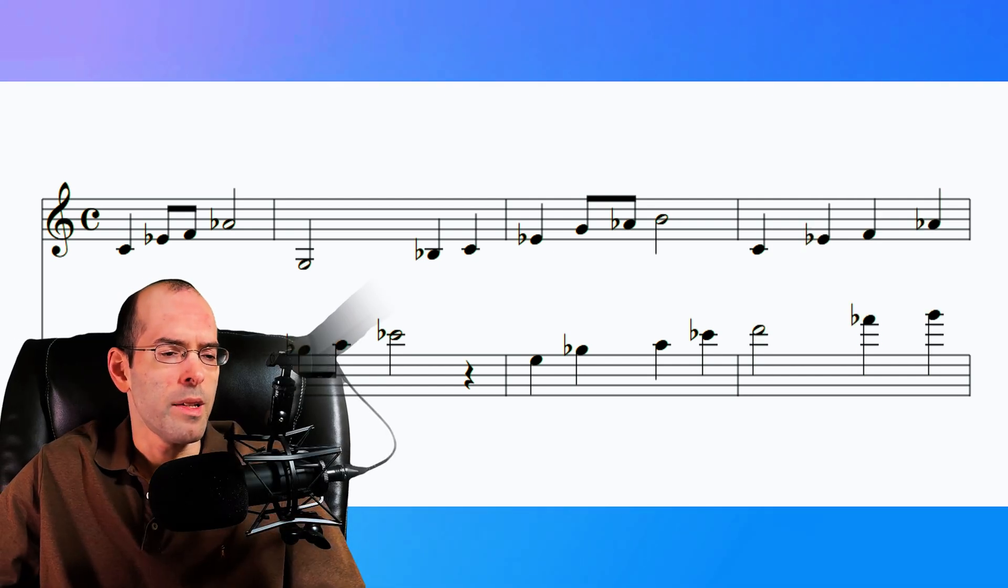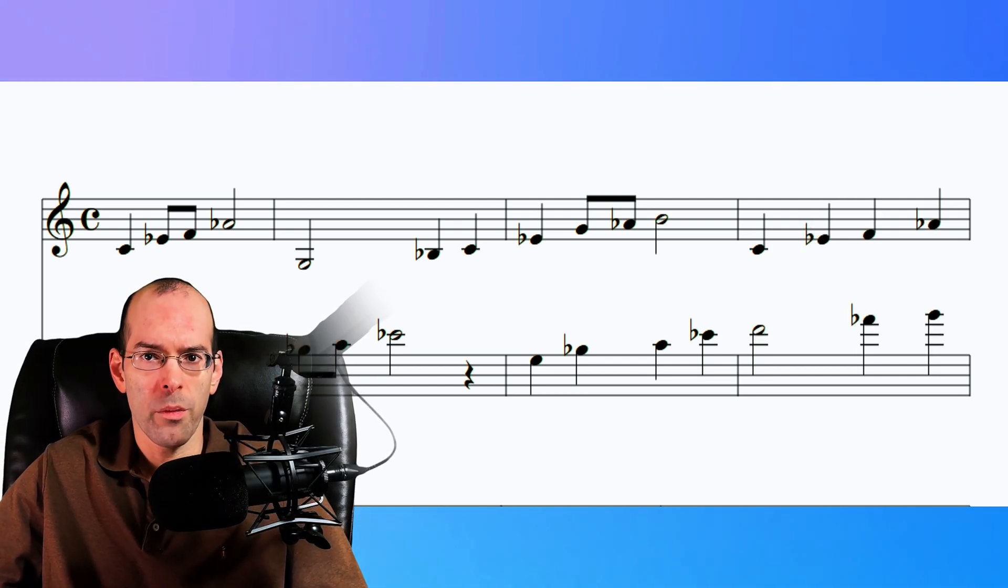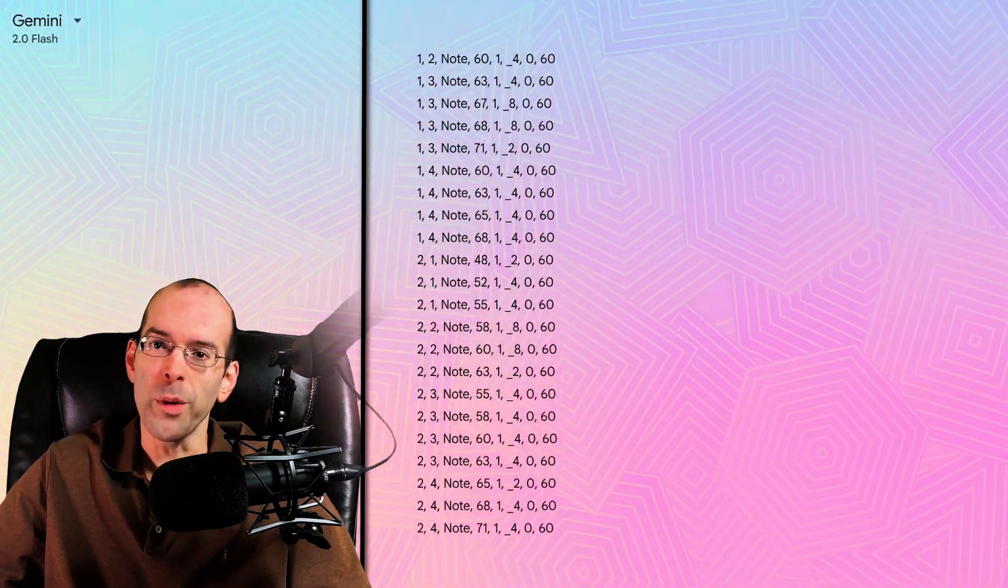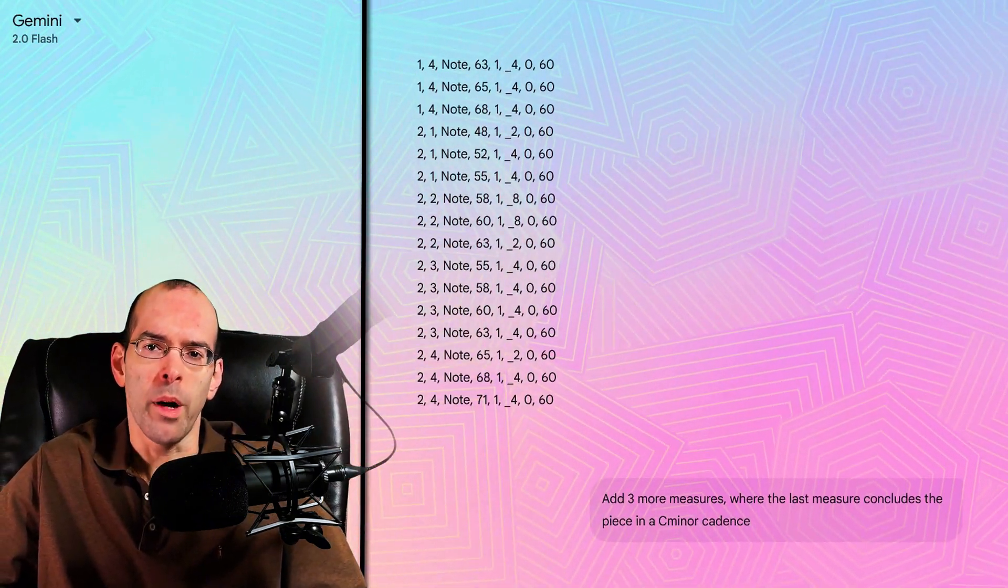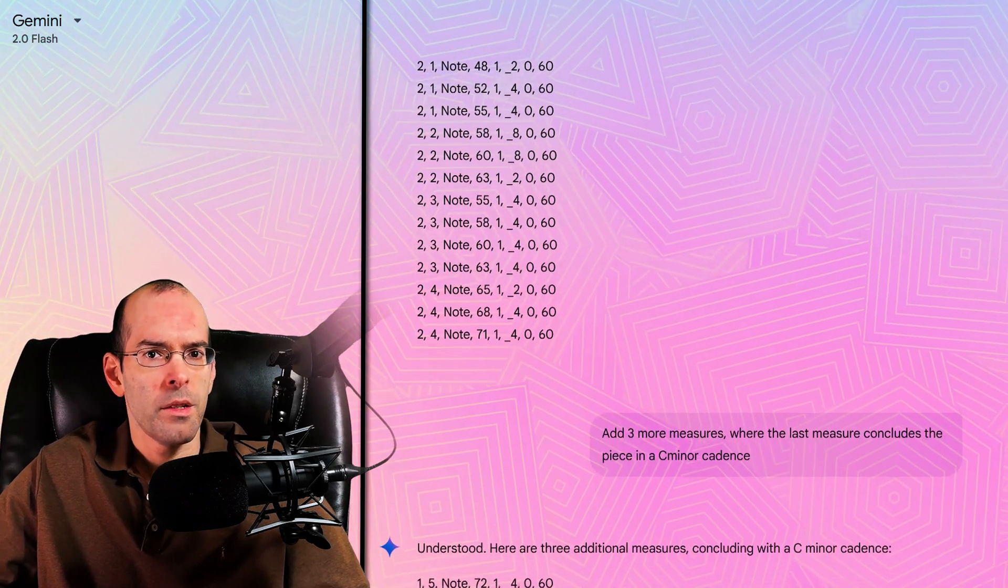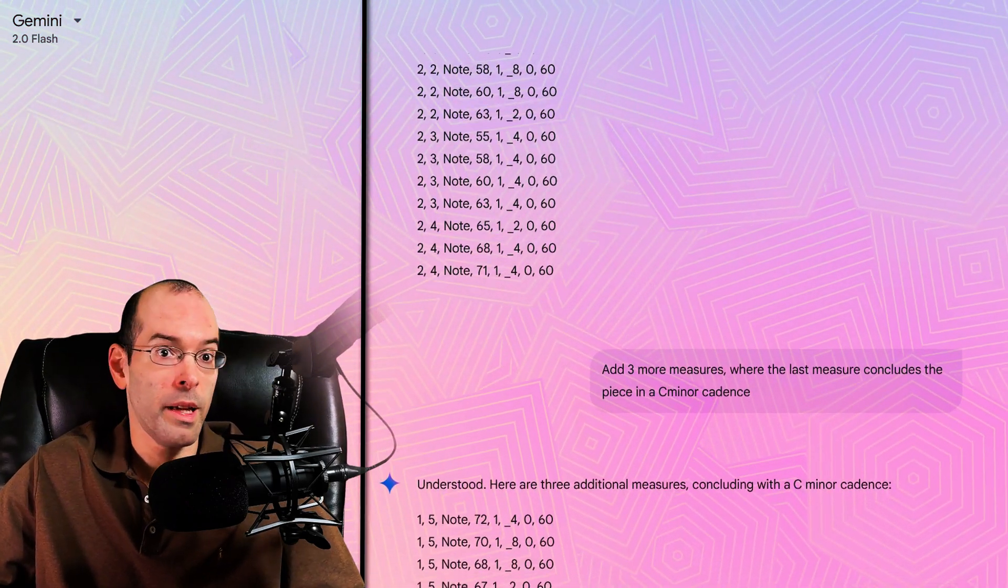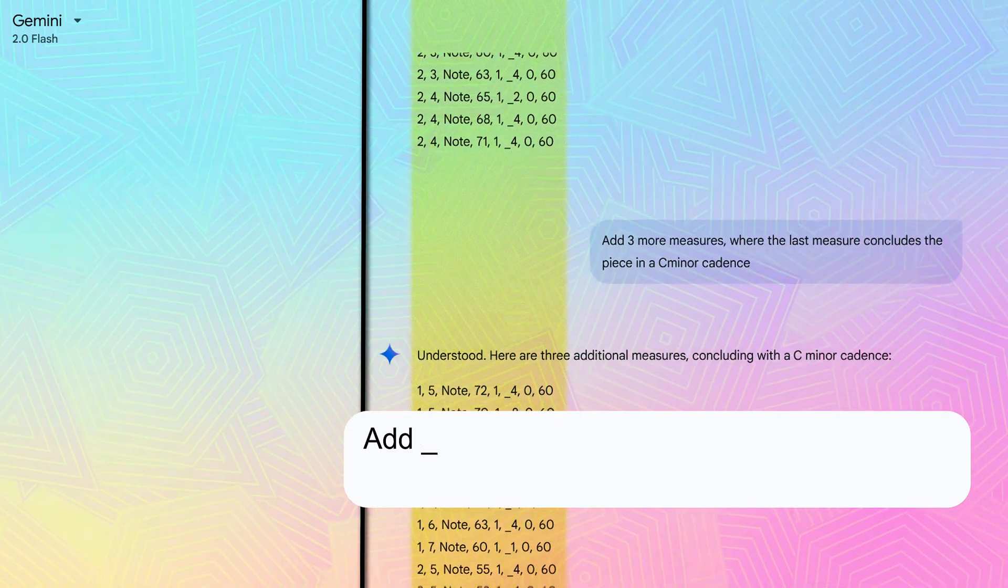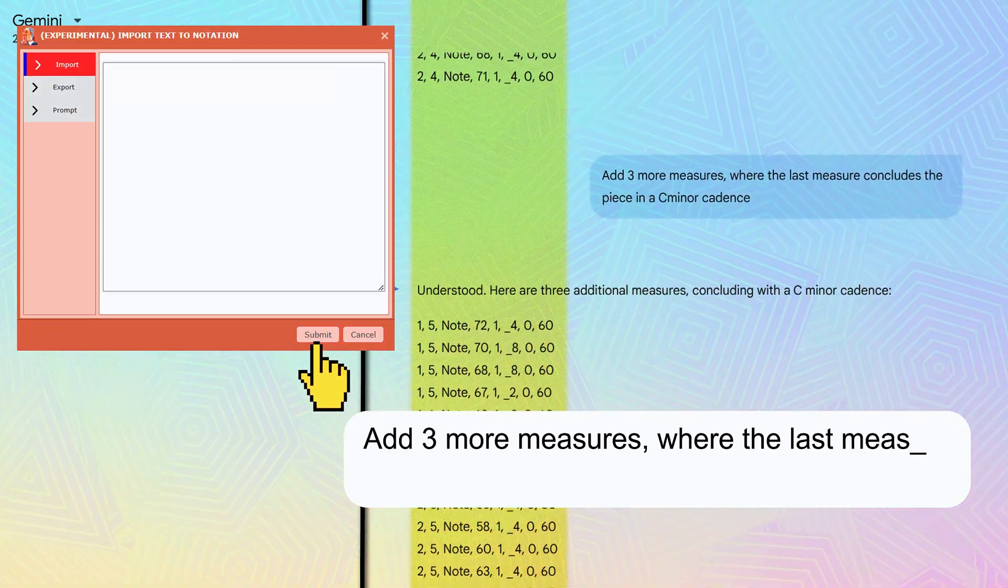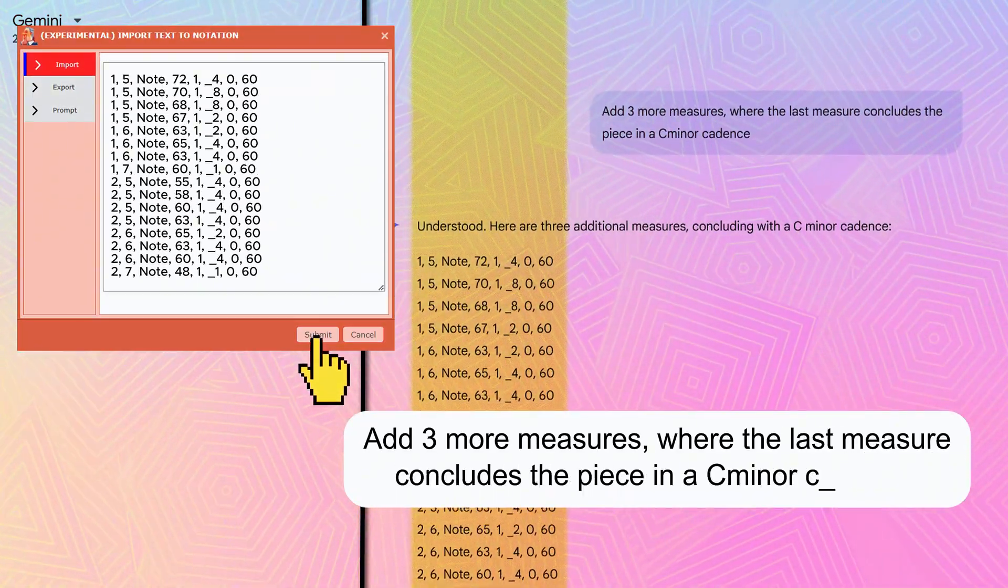So what this tells me is that there is a somewhat coherent melody with some questionable harmony. But we can hear that it's trying to be in C minor. Either way, this doesn't have a cadence, and we clearly can't conclude the piece this way. So let me prompt again. Add three more measures where the last measure concludes the piece in a C minor cadence.